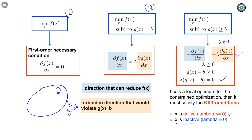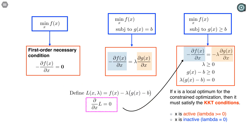All four conditions in the red box are known as the KKT conditions for optimization with an inequality constraint. Furthermore, the first equation can be rewritten as the derivative of the Lagrangian function with respect to x being zero. The Lagrangian function is defined to be the objective function minus lambda times the constraint.